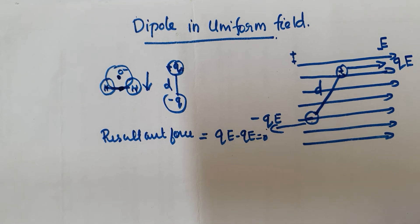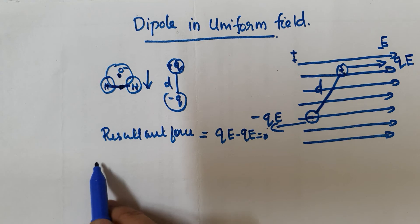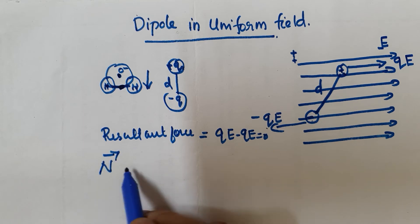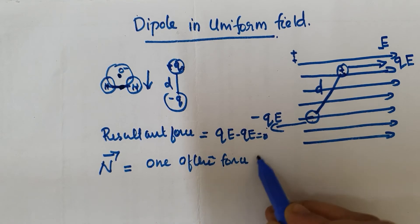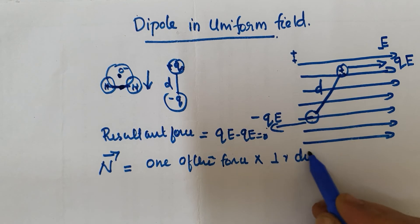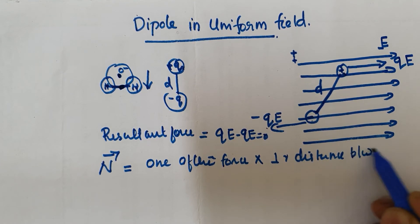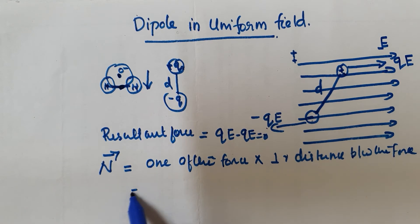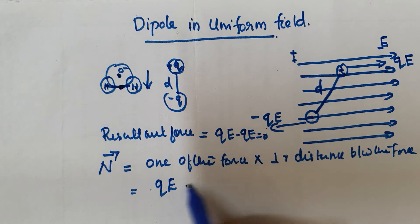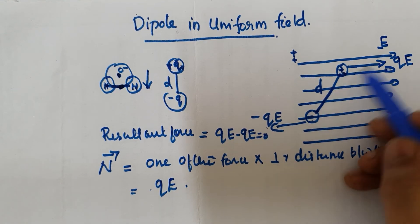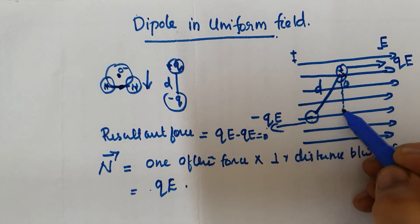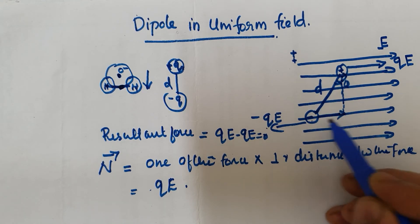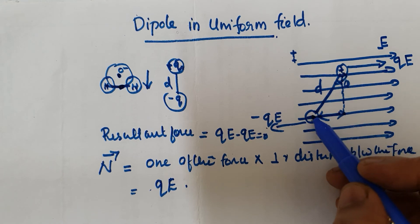Since the net force is zero, there must be some torque acting on the dipole. The torque can be represented as the product of one of the forces and the perpendicular distance between the two forces. The magnitude of one force is qE. If the dipole makes an angle theta with the field, the perpendicular distance between the plus q and minus q charges can be determined geometrically.